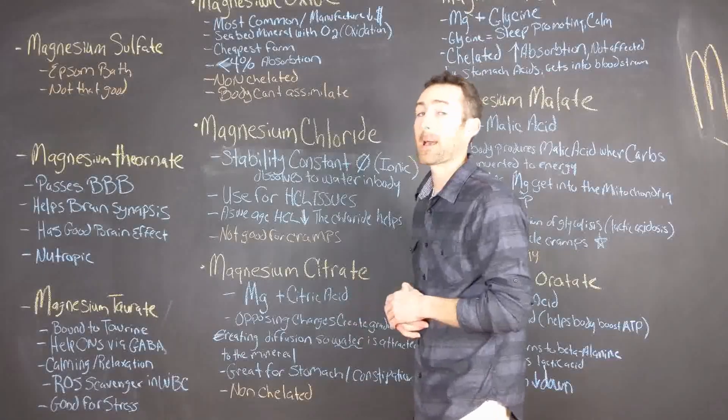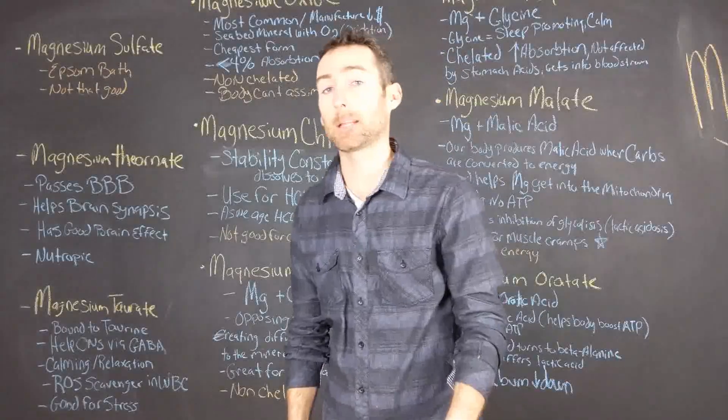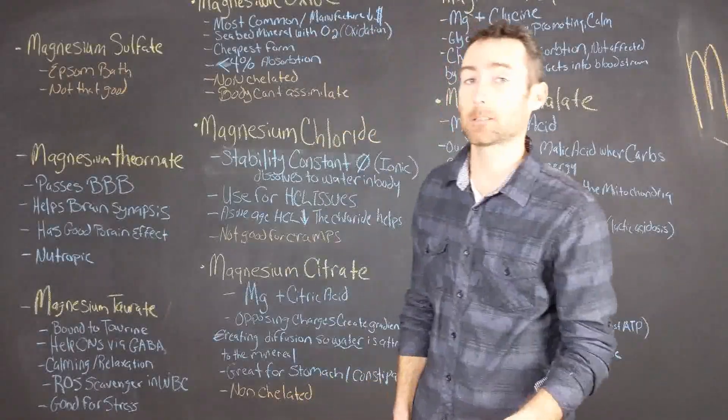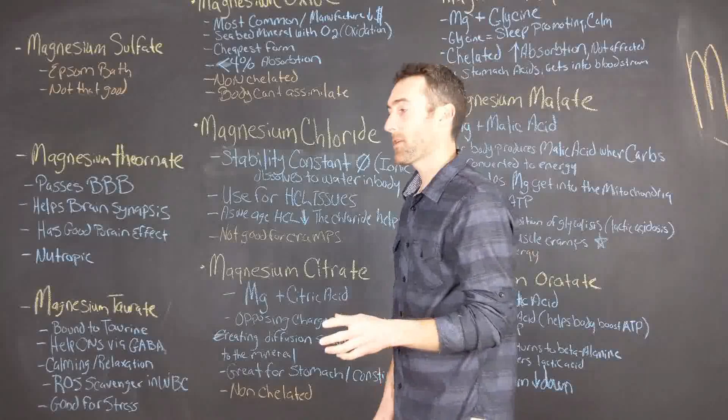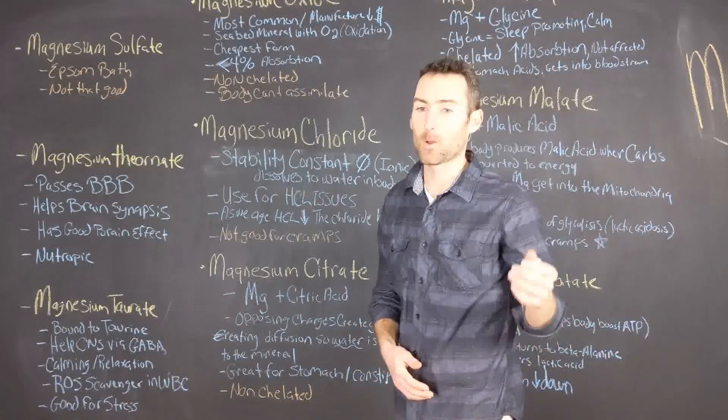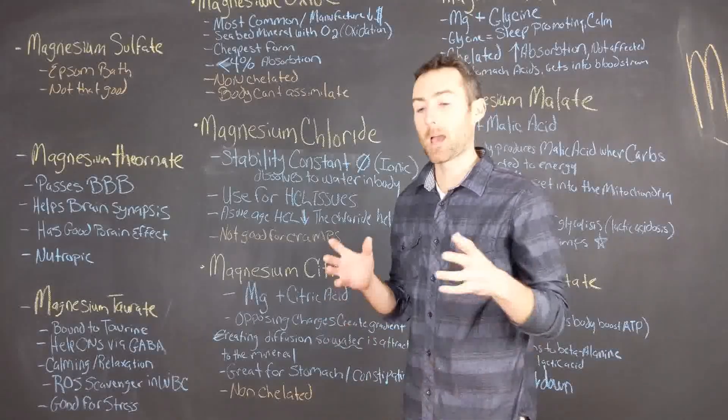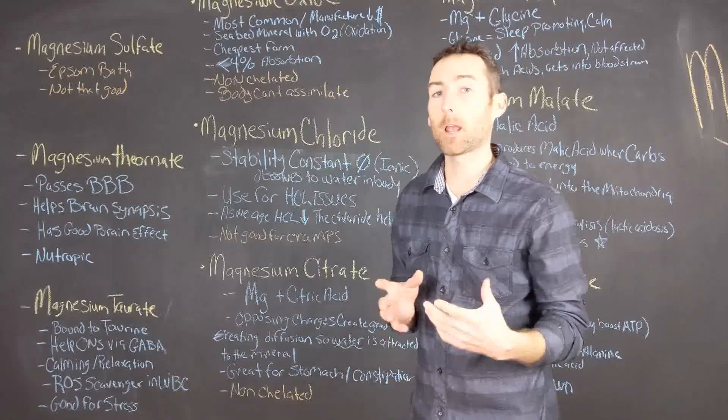The next form of magnesium I want to talk about is magnesium citrate. Magnesium citrate is magnesium bound to citric acid. The odd thing about this is magnesium and citric acid are opposing charges, meaning one is positive and one is negative, almost like a car battery. And it creates a gradient.